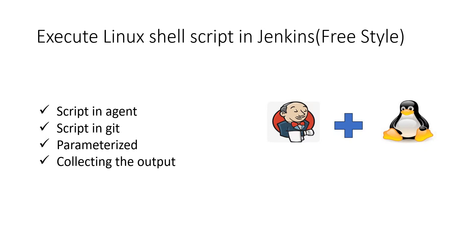Hello everyone. In this video we are going to discuss how to execute a Linux shell script in Jenkins. We would consider a freestyle job. In the next video we would implement the same using Jenkins pipeline. Here we would see how to execute the script if it is present in the Jenkins agent or master, how to execute if it is in a version control tool like Git, how to send parameters to the shell script from the Jenkins job, and how to collect the output of the shell script inside the Jenkins job.